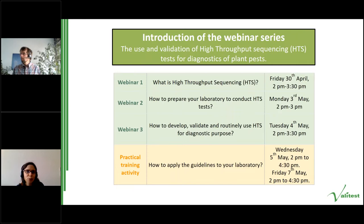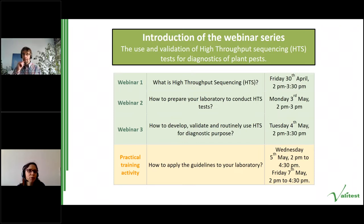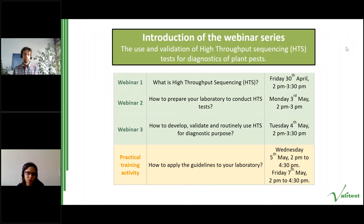Good afternoon everybody and welcome to the second webinar of the VALTEST webinar series on the use and validation of high throughput sequencing tests for diagnostic of plant pests. VALTEST is an EU funded project undertaken by a consortium of 16 partners, built to improve the reliability of diagnostic tests performed in plant health laboratories across the European and Mediterranean region. This series presents recommendations developed by VALTEST WP2 on the process of selection, development, validation, and verification of HTS tests and the quality assurance of their routine use as diagnostic tests.